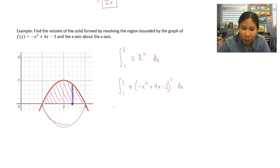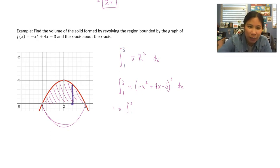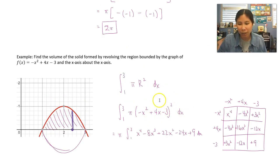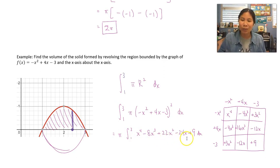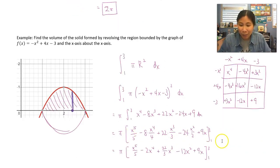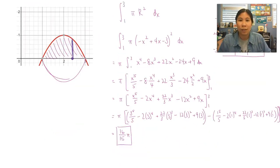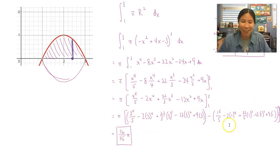Moving pi out front, I need to square out the expression. I use a box method to multiply everything, and get x to the fourth minus 8x cubed plus 22x squared minus 24x plus 9. Then we integrate using the power rule, simplify, and plug in 3 and 1. Long story short, I got 16 over 15 pi.